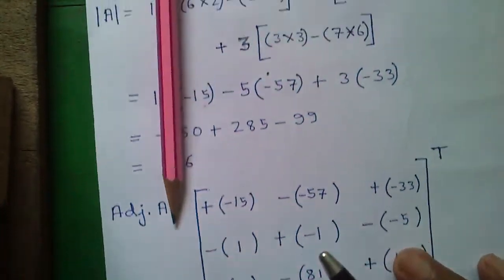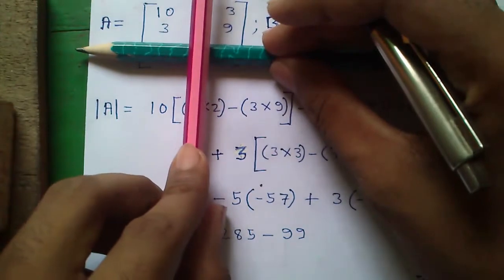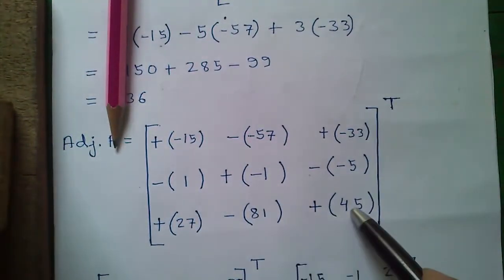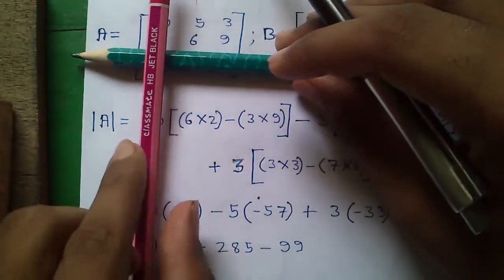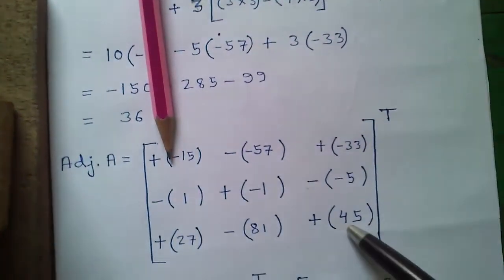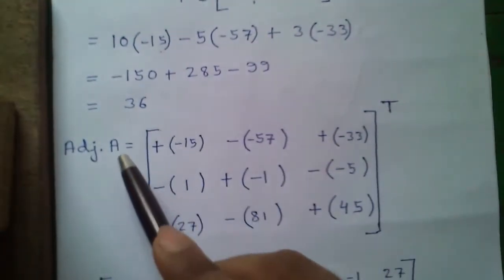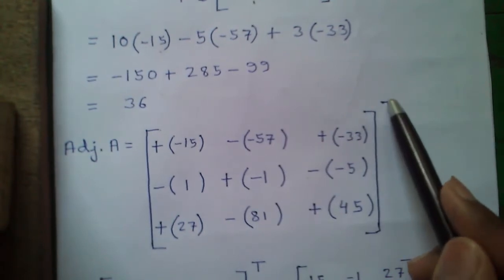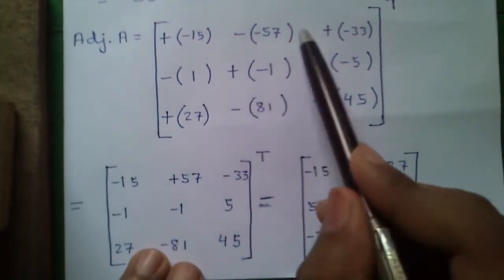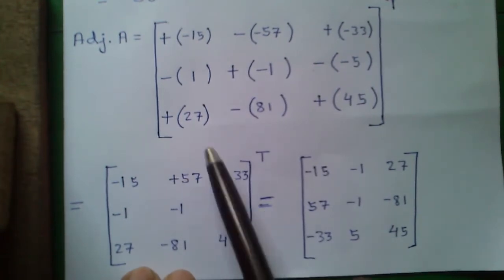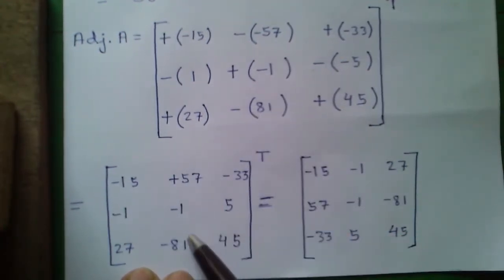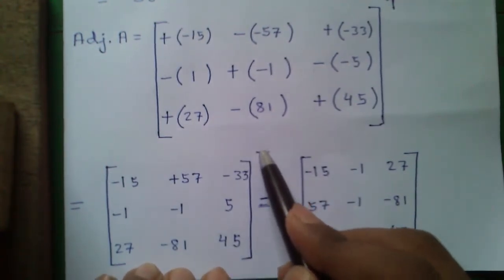For row 3, column 2: 10×9 − 3×3 = 90−9 = +81. For row 3, column 3: 10×6 − 3×5 = 60−15 = +45. But this is not yet our adjoint. Applying the alternating sign pattern and simplifying, we get: −15, +57, −33 in row 1; −1, −1, +5 in row 2; +27, −81, +45 in row 3.